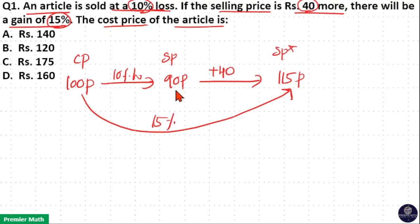Now you can see here difference between 90 parts and 115 parts is equal to 25 parts. This 25 parts actual value is Rs.40.